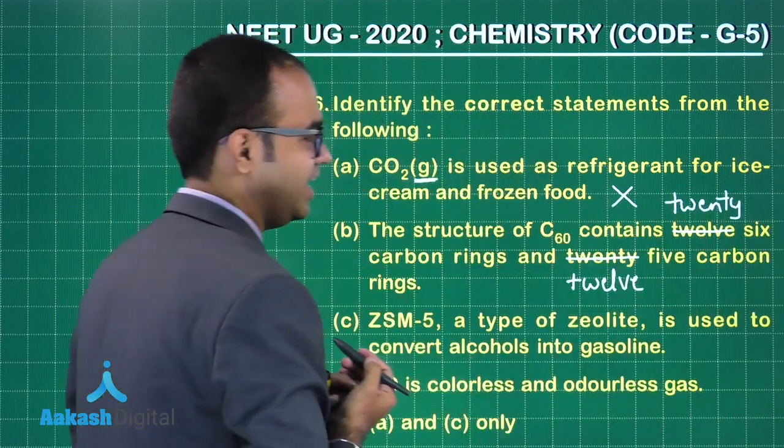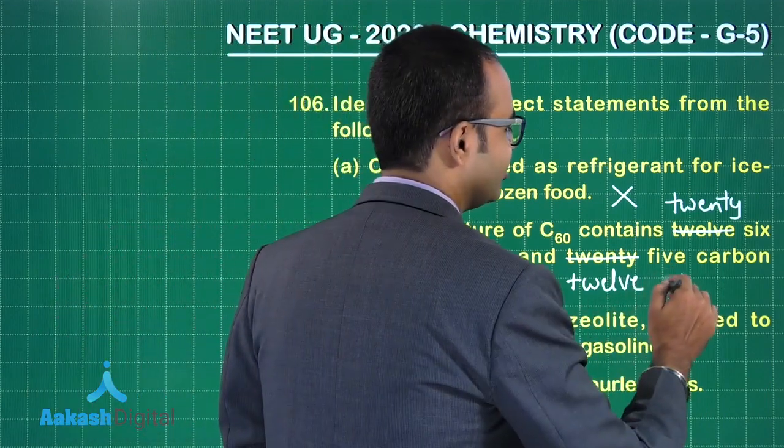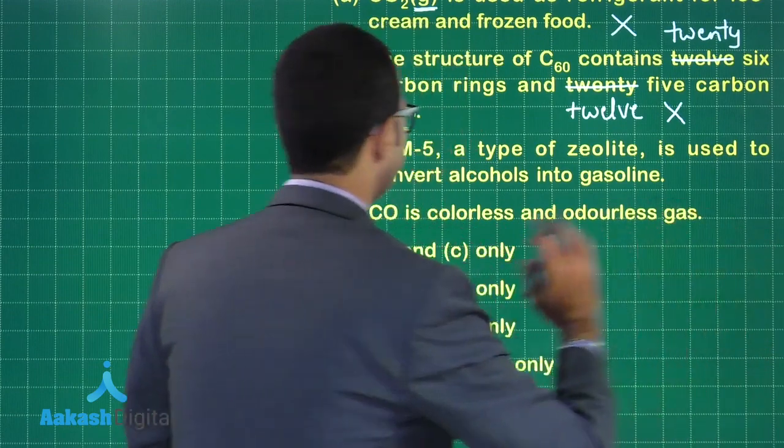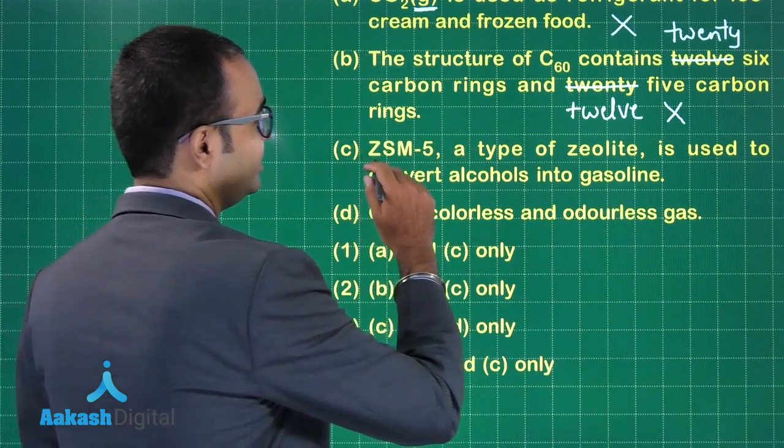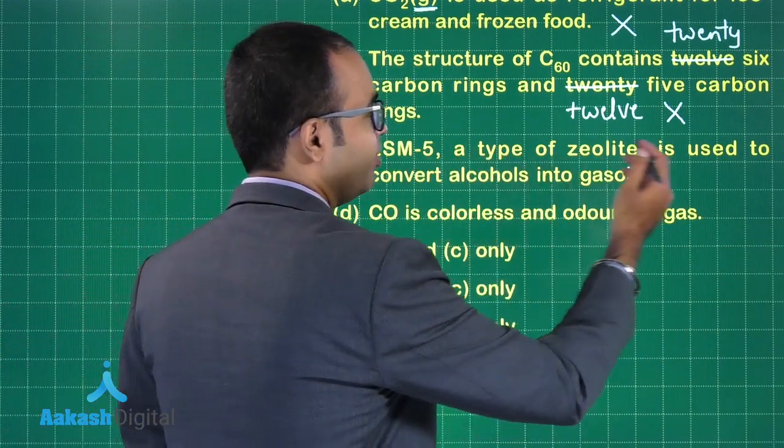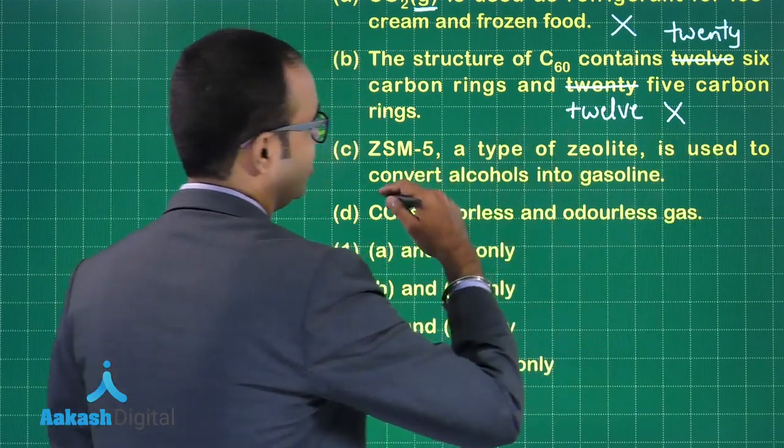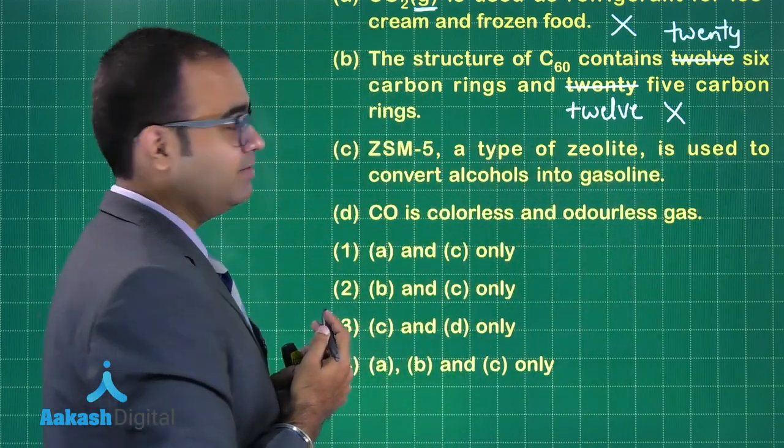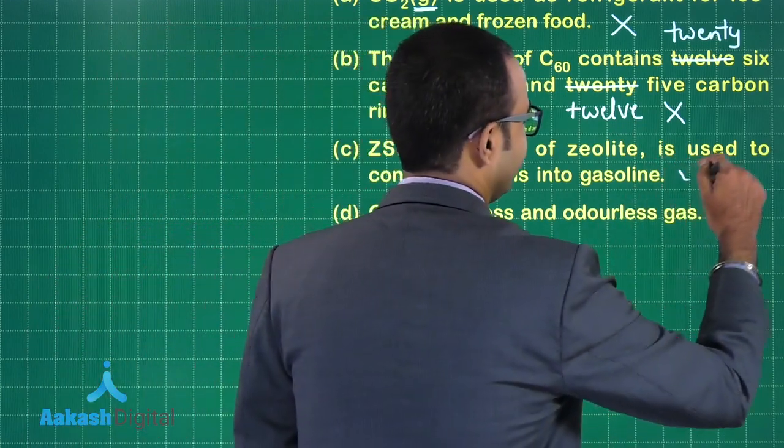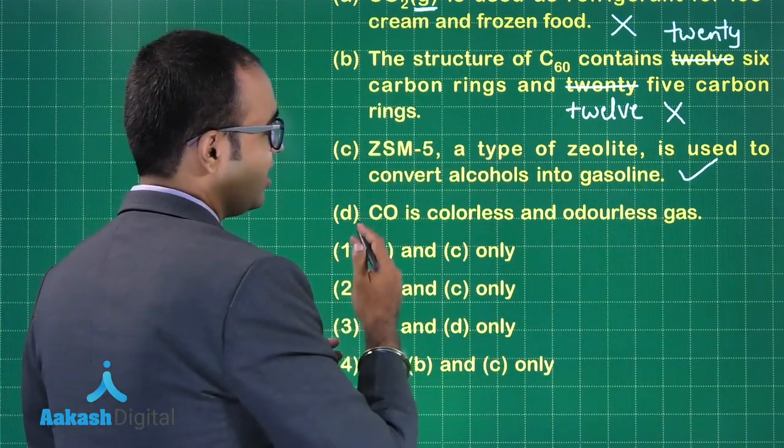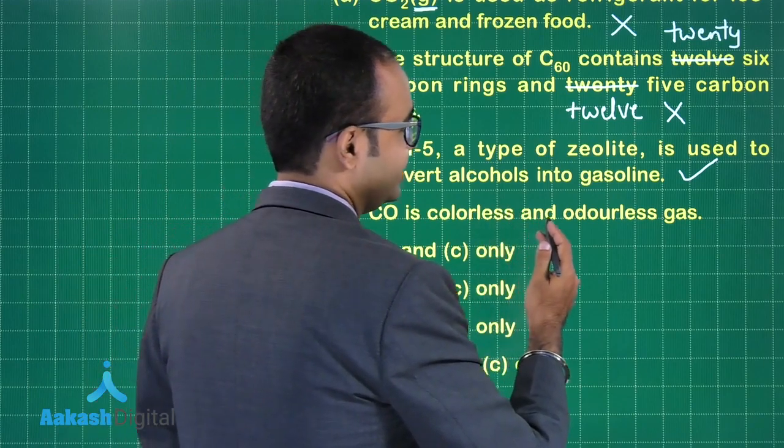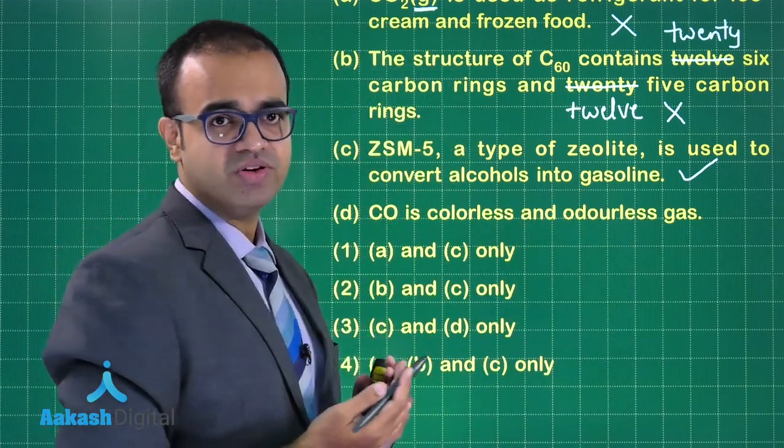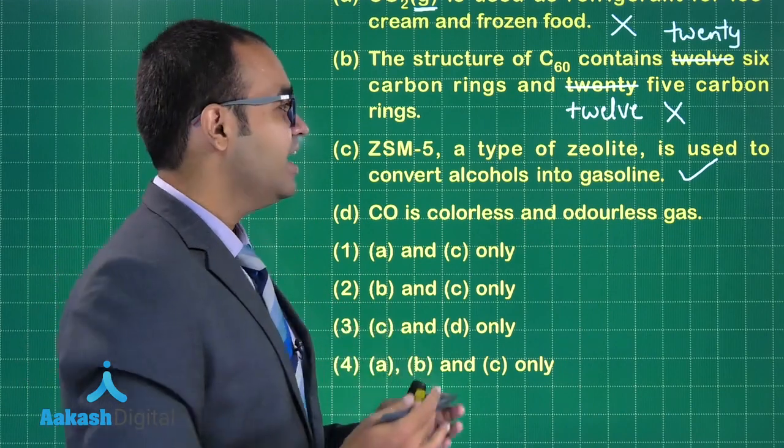ZSM-5, a type of zeolite, is used to convert alcohol into gasoline. Is this statement correct? Yes, it is correct. The last statement: carbon monoxide is colorless and odorless gas. Yes, carbon monoxide is a colorless gas and also it doesn't have any specific odor. That's why this statement is also correct.